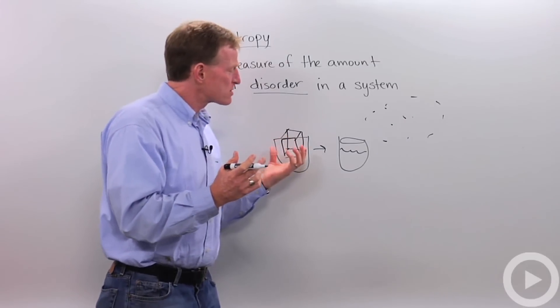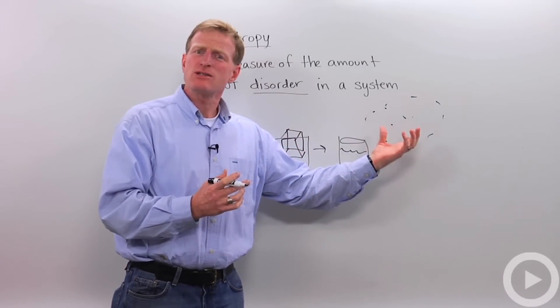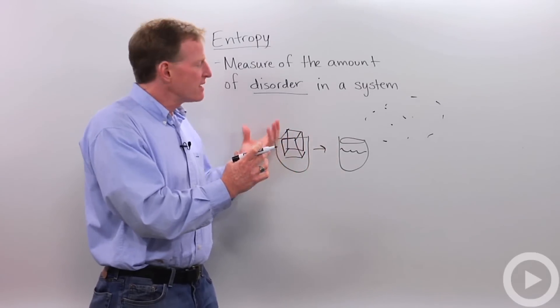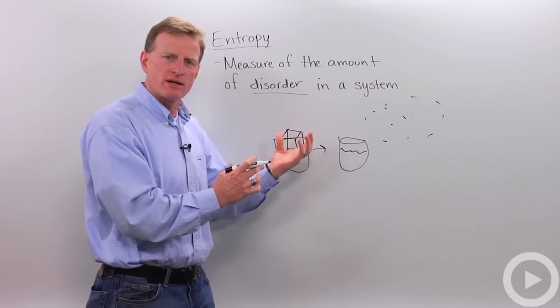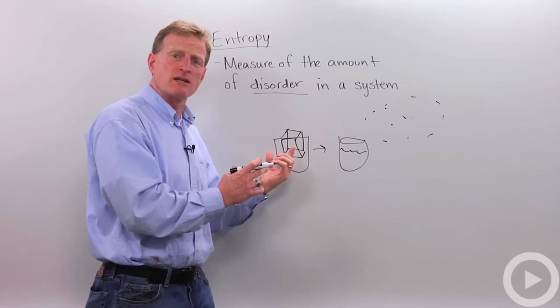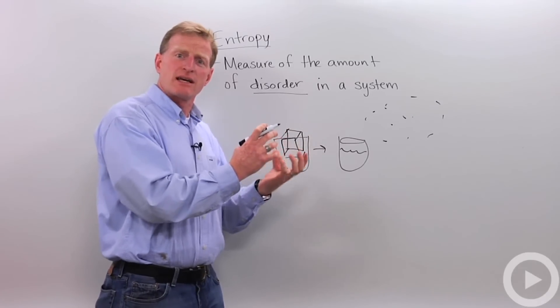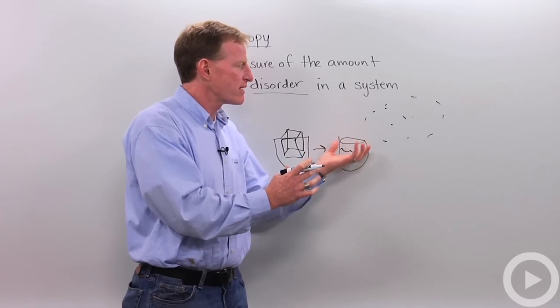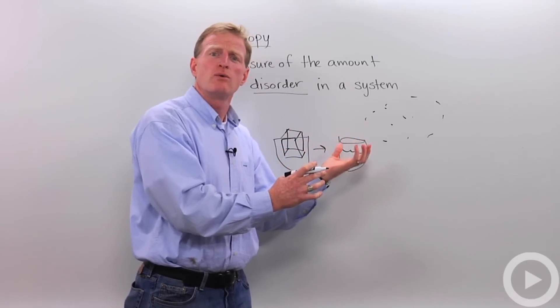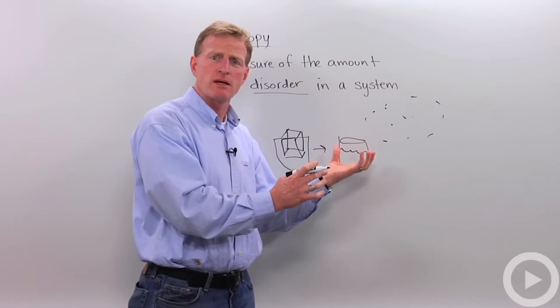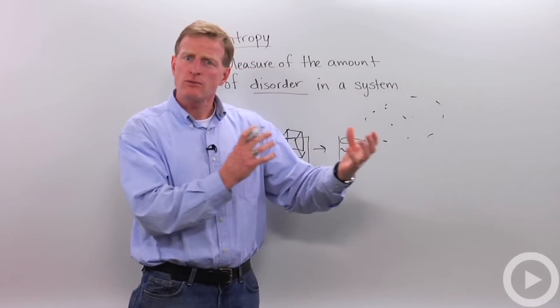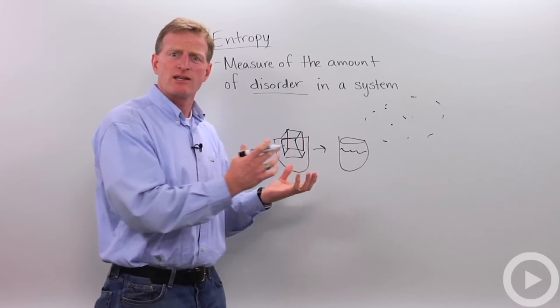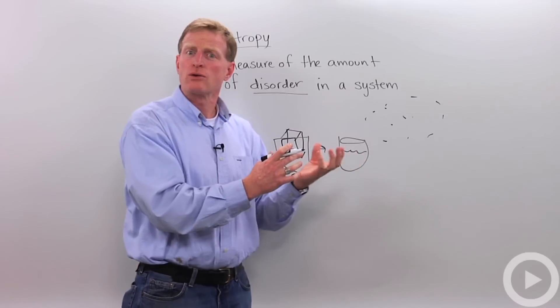But as the water is going from order to disorder, that energy is also causing an increase in entropy in the air molecules around it. As the ice is melting, the air around it is getting cooler, and that's causing a decrease in entropy. And as the water evaporates, that evaporative cooling is cooling off the air, which causes a decrease in entropy in the air. So entropy can go in two directions, and oftentimes it goes in two complementary directions as one thing heats up and another cools off.